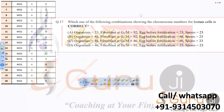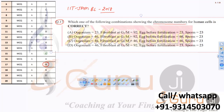This question appeared in IIT Jam BL 2018 and its key was released. According to the key, the answer is B for question number 17. The question asks which combination showing chromosome numbers in the human being is correct. There are certain cells given: oogonium, fibroblast at G2/M transition, egg before fertilization, and sperm.